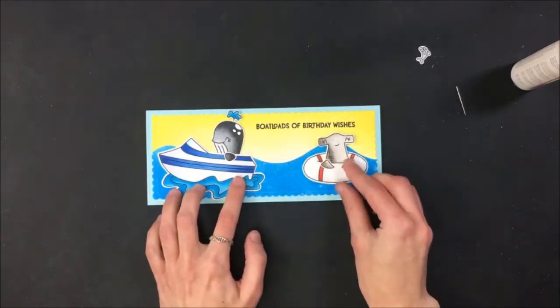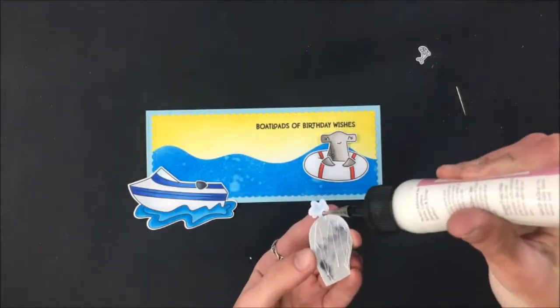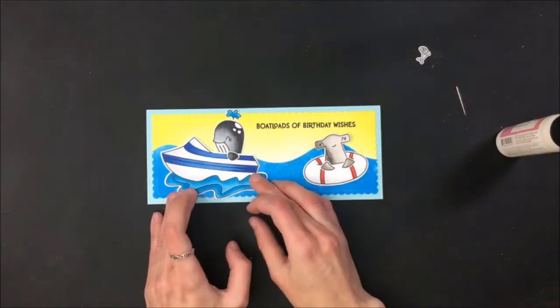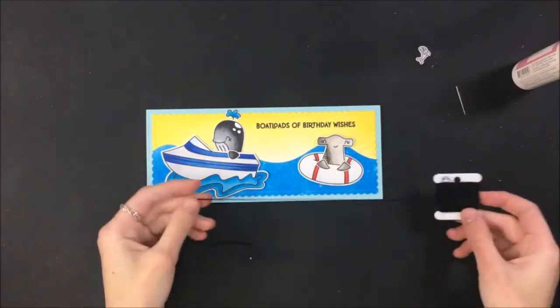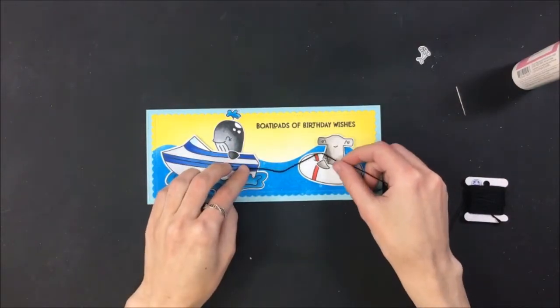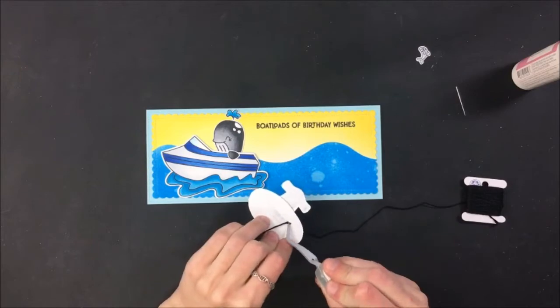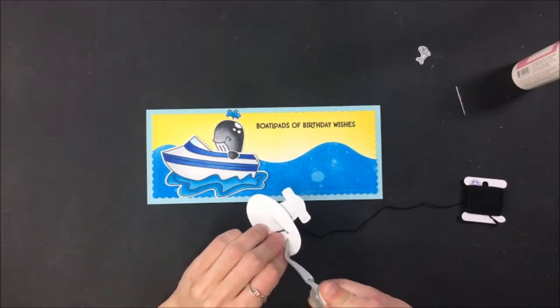Then I am gluing down my panel to my card base and then I'm just going to glue down all of my other things. I did find a way to make that whale not have to cut off his cute little spout of water and then I wanted this to look like the whale was pulling the little hammerhead shark in the tube behind the boat.